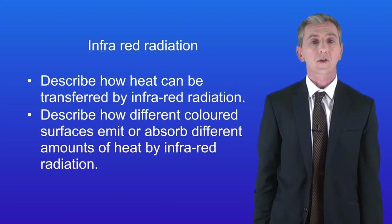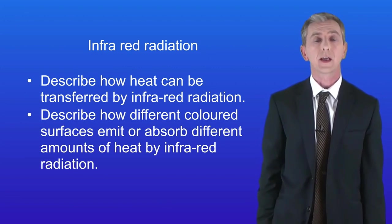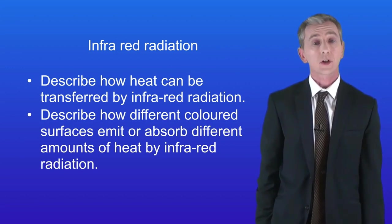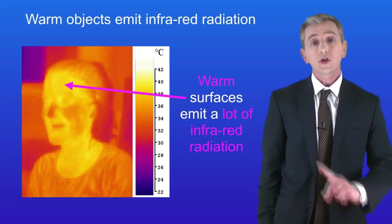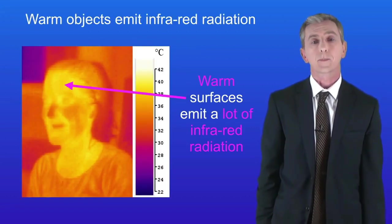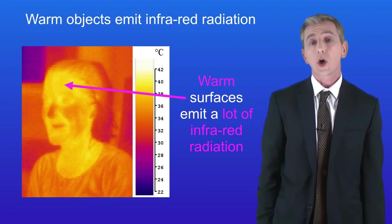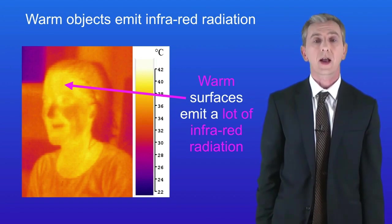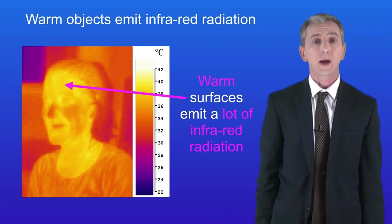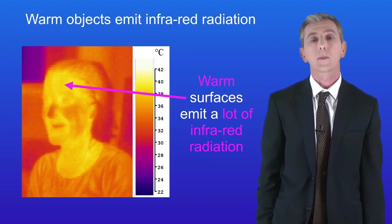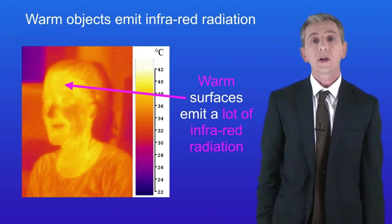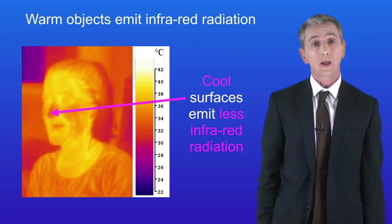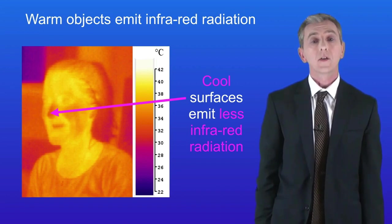By the end of this video you should be able to describe how heat can be transferred by infrared radiation. You should also be able to describe how different coloured surfaces emit or absorb different amounts of heat by infrared radiation. This shows you an image of a woman taken with an infrared camera. Infrared radiation is a bit like light except we can't see it with the human eye, but we can see it with special cameras. Warm objects can lose heat by infrared radiation and that includes humans. The warm parts of this woman's face, such as her forehead, are releasing a lot of infrared radiation and they appear lighter coloured. Her nose is cool and you can see that it's releasing less infrared radiation so it appears darker.